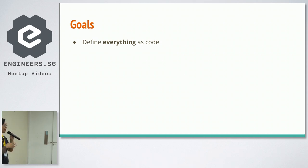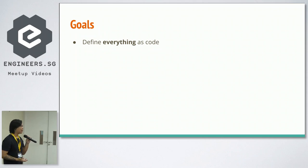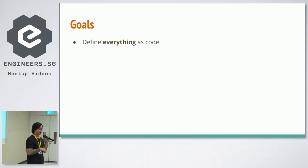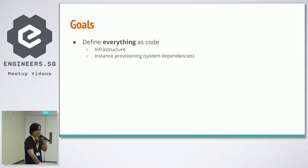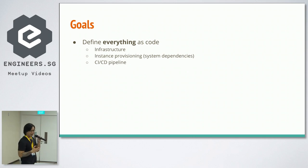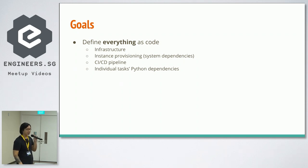The goal when redesigning the system was to make everything reproducible — define everything as code. One of the only ways we can move as fast as we do is to define everything as code, so that if an instance goes down, we can immediately bring it up. This applies to infrastructure, instance provisioning, and even the CI/CD pipeline. Previously we were sharing dependencies; now we want to define individual tasks' Python dependencies as code as well.